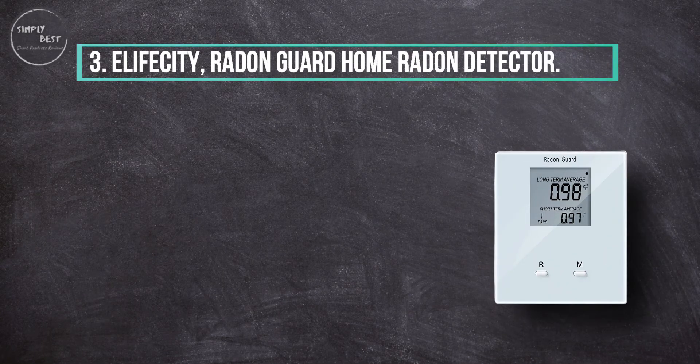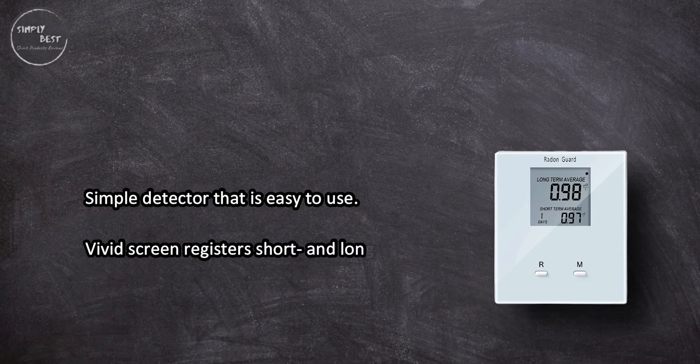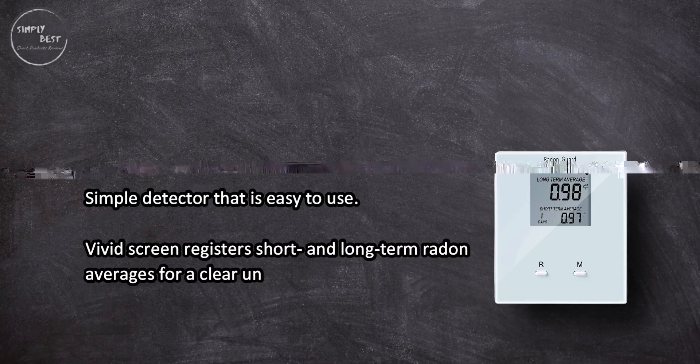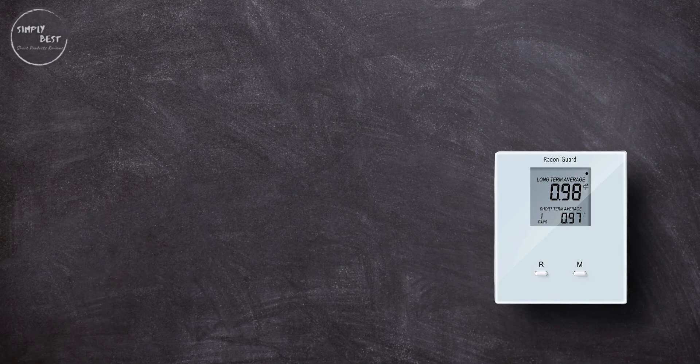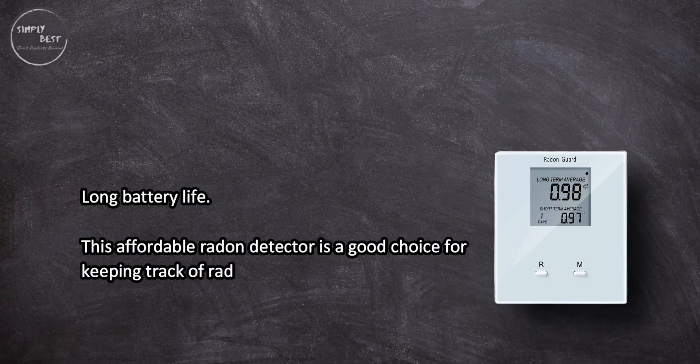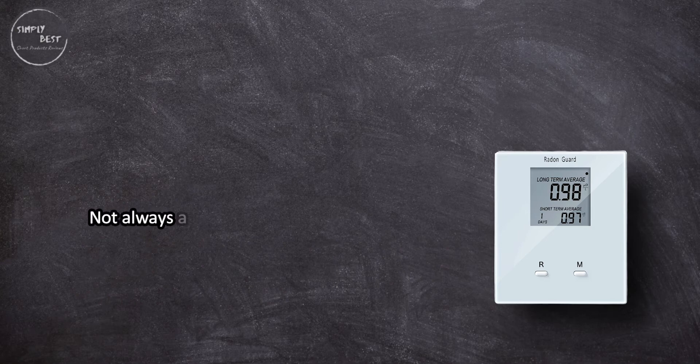Simple detector that is easy to use. Vivid screen registers short and long-term radon averages for a clear understanding of indoor radon levels. Long battery life. This affordable radon detector is a good choice for keeping track of radon levels after an inspection to rule out a serious problem. Not always accurate. Having a professional radon inspection checks for high levels.